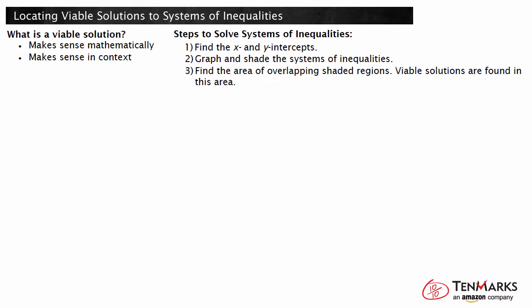To determine if a solution is viable, graph the ordered pair and determine if it falls within the region. If it does and it makes sense within the context, it is a viable solution. If it does not fall within the region, it is not a viable solution.